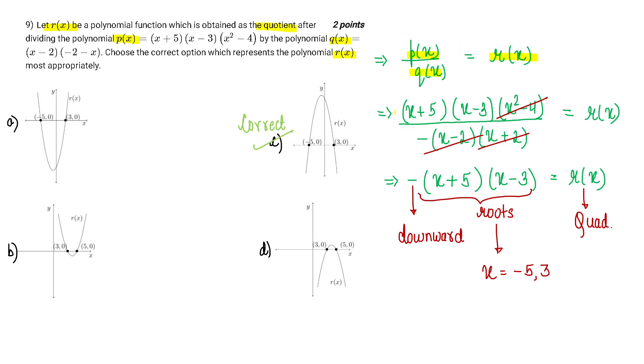So let's substitute the value of p(x) and q(x). Luckily, these get cancelled out. So r(x) will come out as minus of (x plus 5)(x minus 3). So this is a quadratic expression. So we will get a parabolic graph.